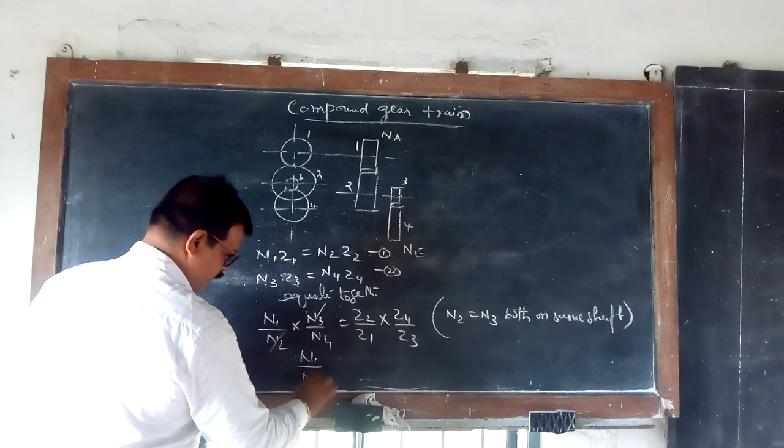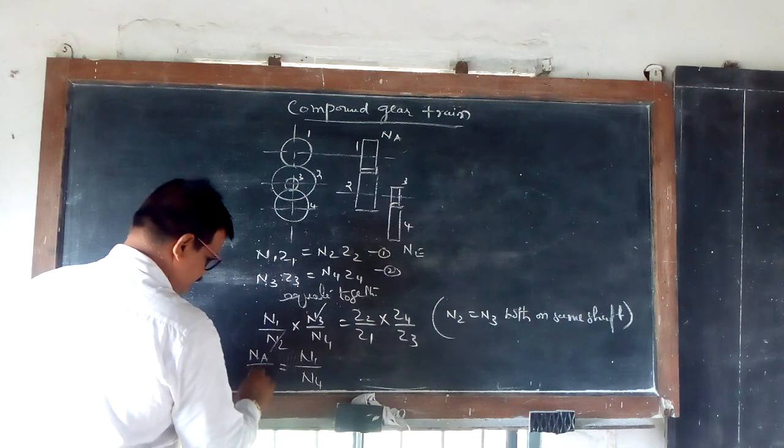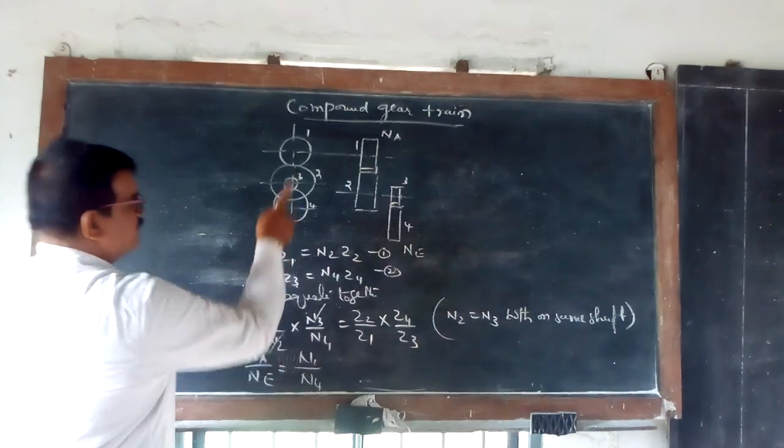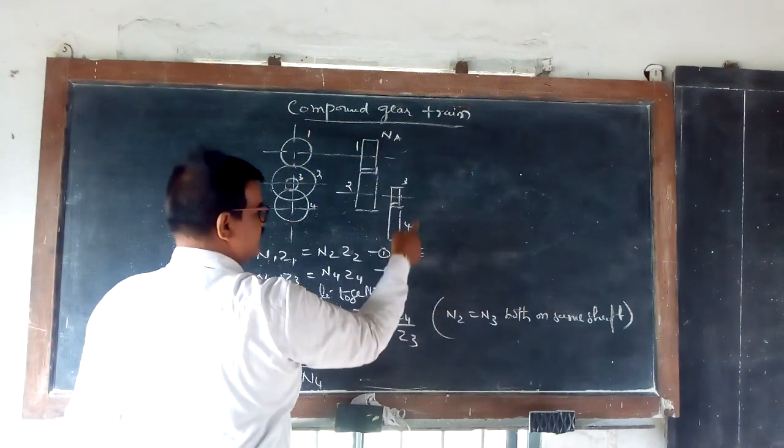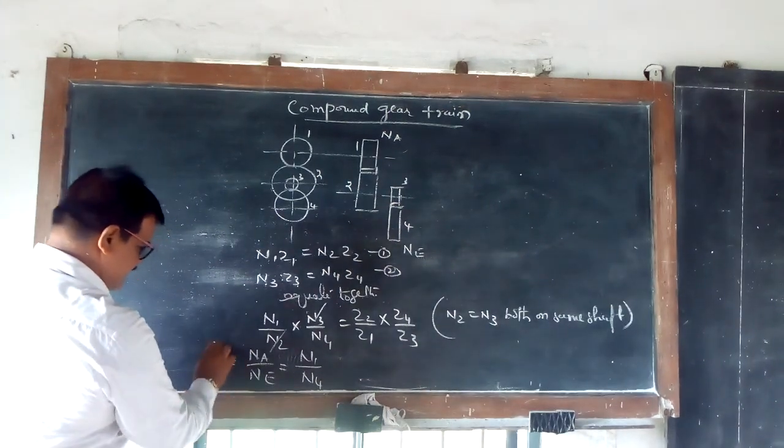N1 by N4, which is equal to N1 by N4, which is the speed of the last first gear, speed of the last driven gear. The relationship is, which is totally, it is called as I.